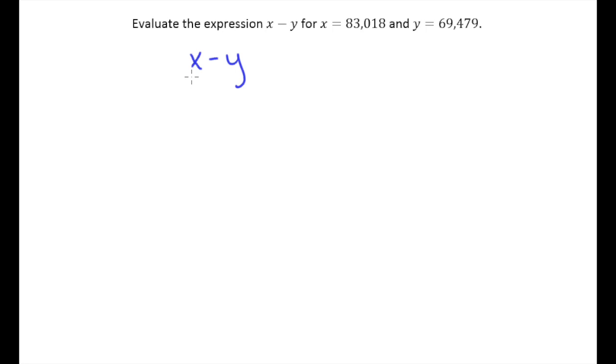And the way to think of them is they're kind of empty containers waiting to have a number placed into them. So when it says evaluate the expression x minus y for x equals 83,018 and y equals 69,479 they're essentially giving us which numbers they want us to put in those empty containers. So I'm literally just going to write out 83,018 instead of x and 69,479 instead of y.